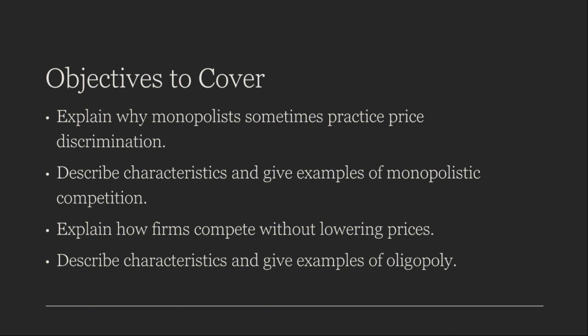Finally, let's explore the world of oligopoly. In an oligopoly, a small number of firms dominate an industry, and this concentration of power results in some interesting dynamics. First would be interdependence — firms in an oligopoly closely monitor and react to each other's actions, which often leads to strategic decision making. Second would be barriers to entry: high barriers such as significant capital requirements make it challenging for new competitors to enter the market. Third would be price leadership — in some cases one dominant firm may set the price and others follow suit, which is common in industries like airlines and telecommunications.